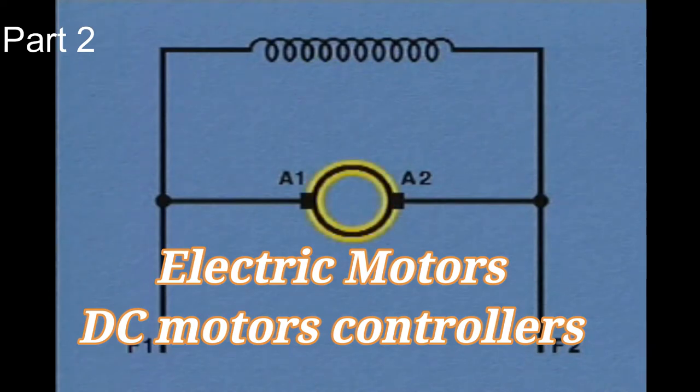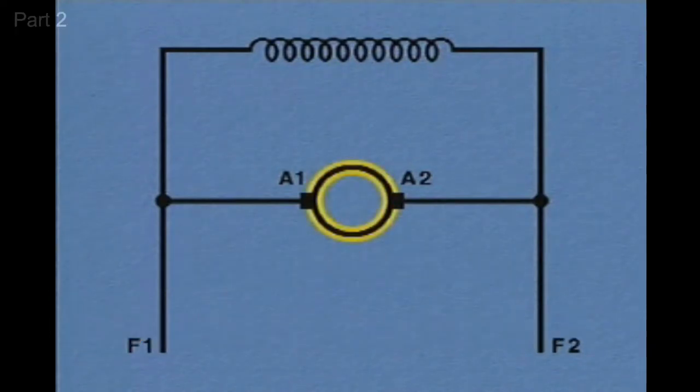Because the resistance of the armature in a DC motor is very low, it's important to always install resistance in series with the armature before starting a shunt motor.